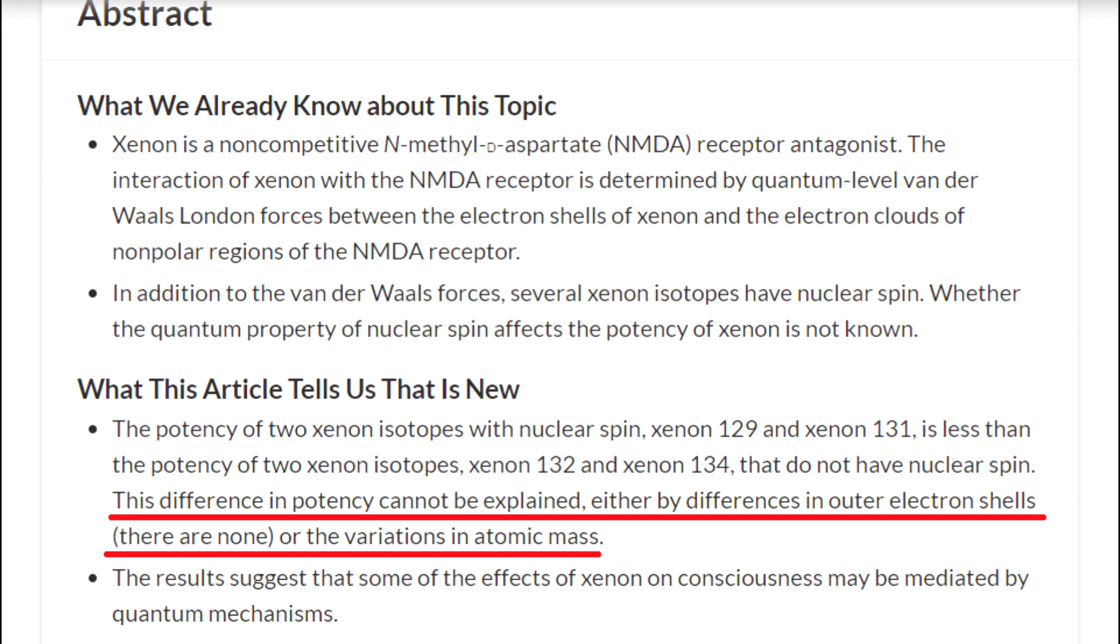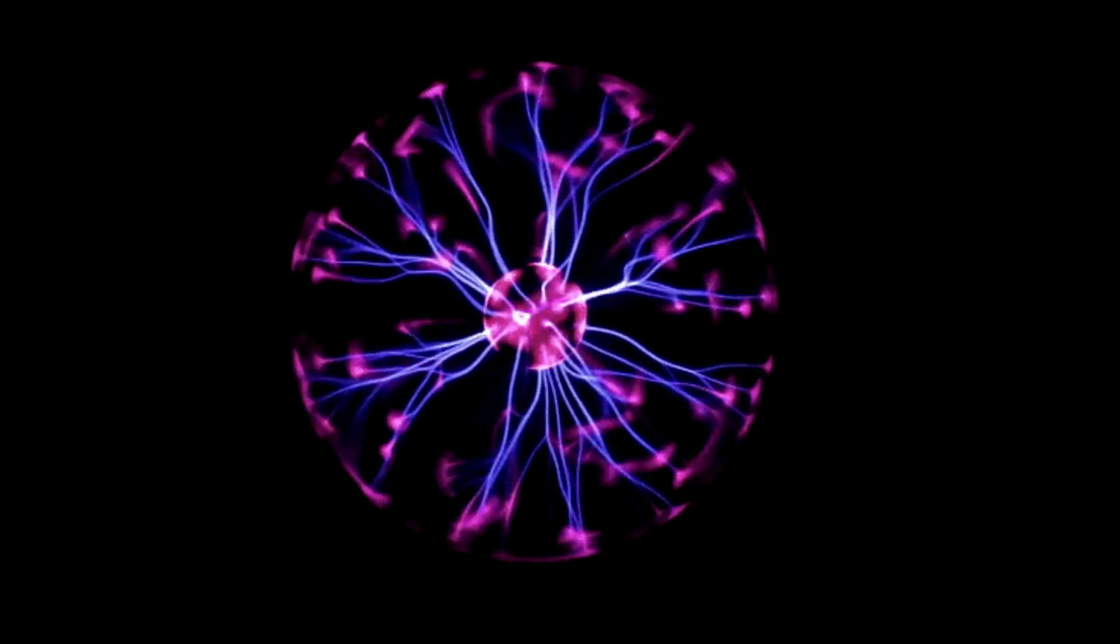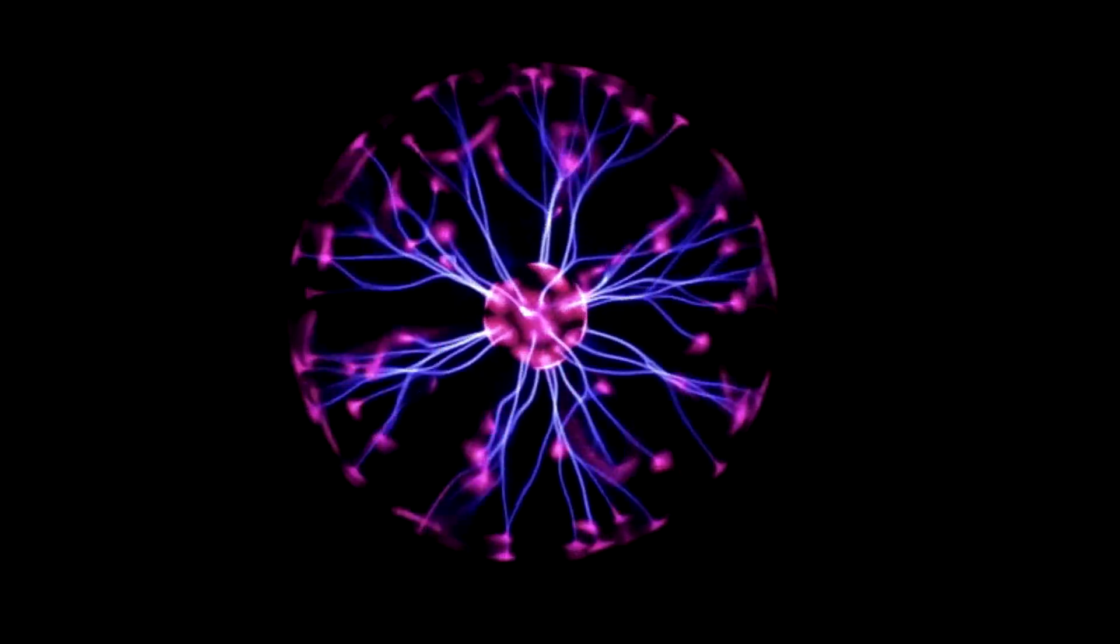This difference in potency cannot be explained either by differences in outer electron shells, there are none, or the variations in atomic mass. What is interesting about all of this, though, is that xenon is a noble gas, meaning it should have no chemical properties at all, as noble gases do not chemically interact.